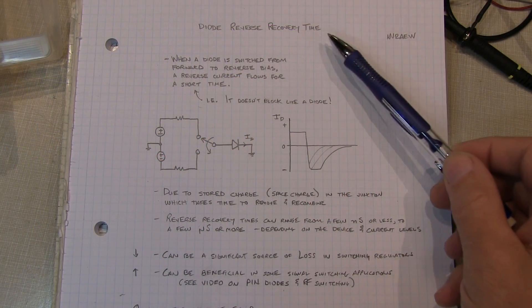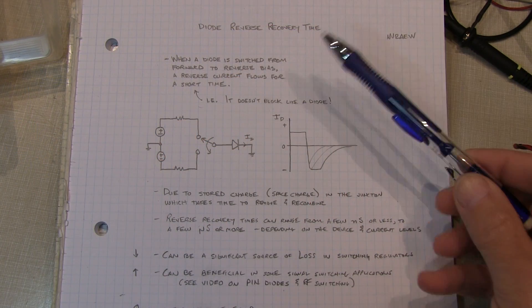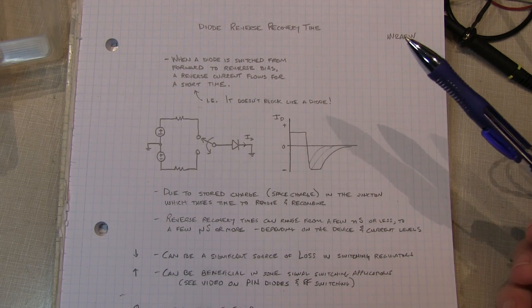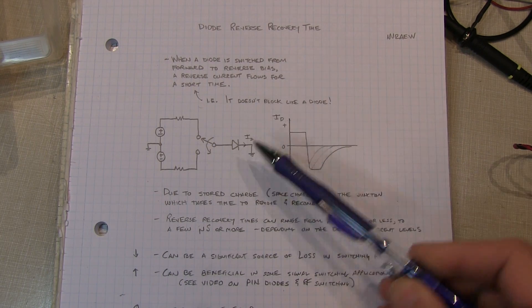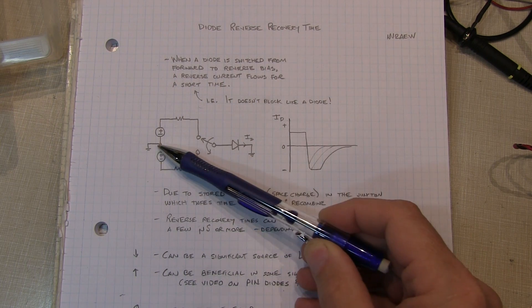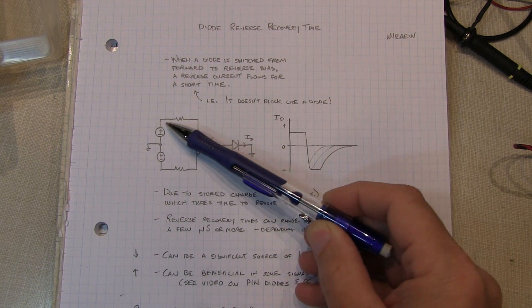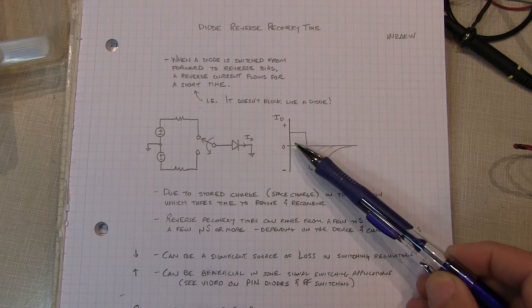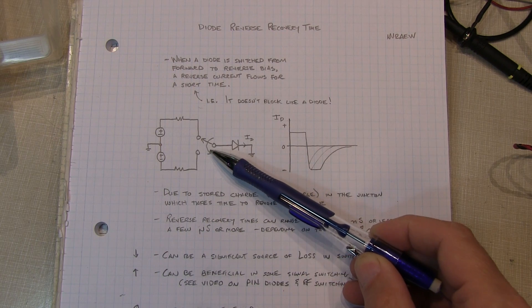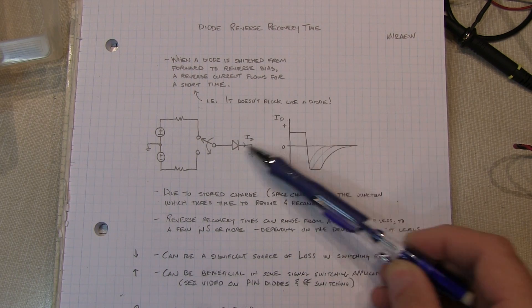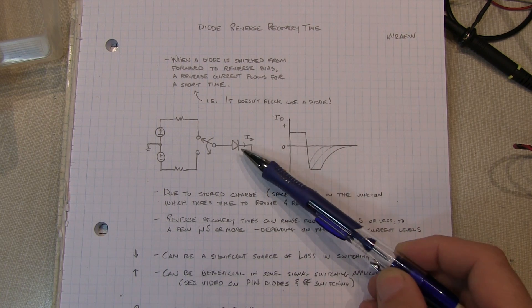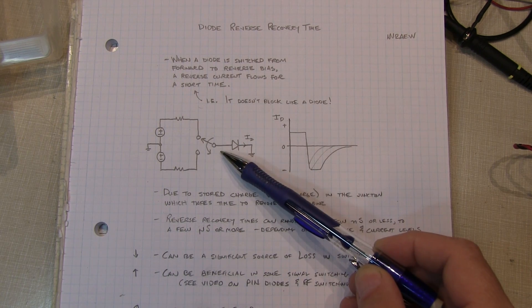So what is the diode reverse recovery time? When a diode is switched from forward to reverse bias, a reverse current actually flows for a short period of time. A way to illustrate this is let's say we have this switch thrown in this position here. We're sending a positive voltage through this current limiting resistor through the diode. When the switch is thrown in the opposite direction to essentially have a negative voltage applied to the diode, you'd say well it's going to act like a diode and block all the current flow.